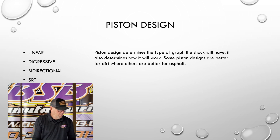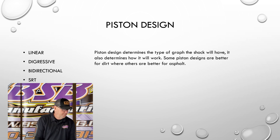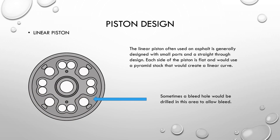So linear piston. There are multiple types — today we're going to cover linear, digressive, bidirectional, and SRT. A linear piston, often used on asphalt, is generally designed with small ports and straight-through design. Each side of the piston is flat and would use a pyramid stack that creates a linear curve. A lot of times on a linear piston, the bleed system is drilled in the piston as a whole.